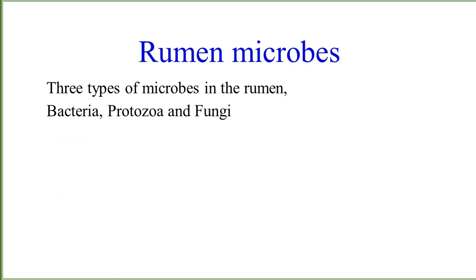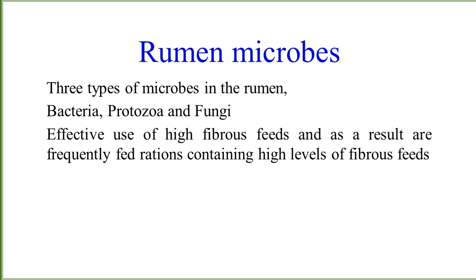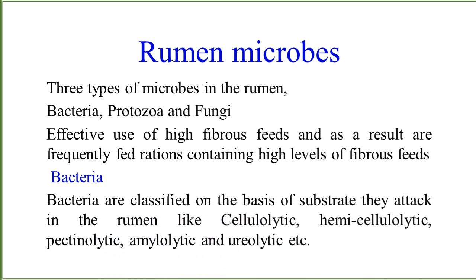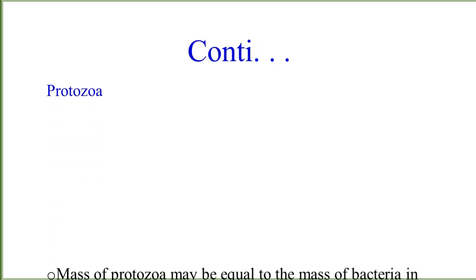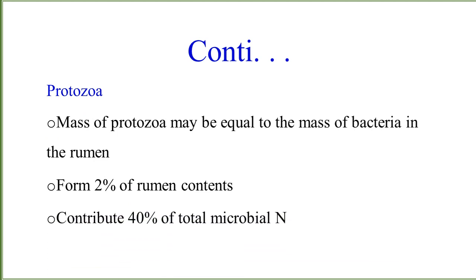There are three types of microbes present in the rumen: bacteria, protozoa, and fungi. Ruminants are adapted for the effective use of high-fibrous diets and are frequently fed rations containing high levels of fibrous feeds. Bacteria are classified on the basis of the substrate they attack in the rumen, such as cellulolytic, hemicellulolytic, pectinolytic, amylolytic, and ureolytic forms, which make up about 2% of the rumen content and contribute about 40% of the total microbial population.